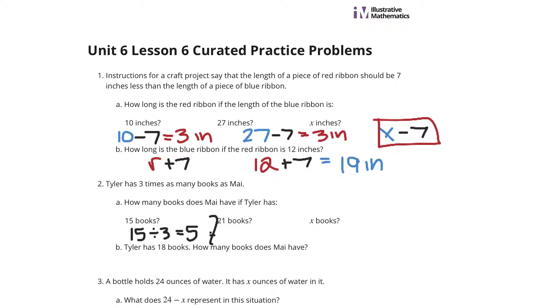If Tyler has 21, we could divide by 3 and get 7 books for May. If Tyler has x books, x divided by 3 is going to be what May has. And you could also write this as x over 3. Now Tyler has 18 books. How many does May have? Well, 18 divided by 3 is going to be 6 books.